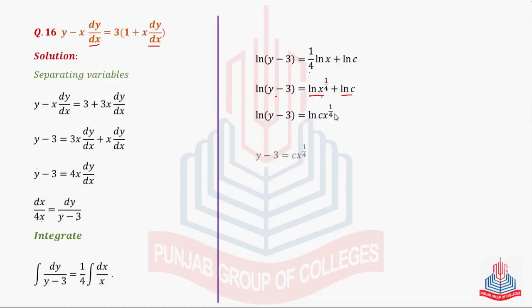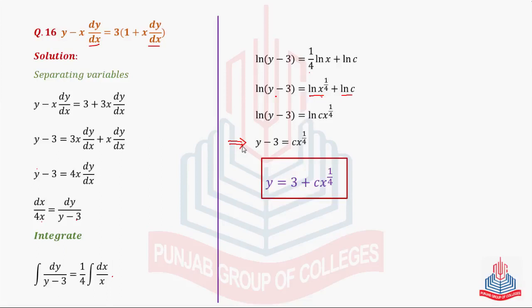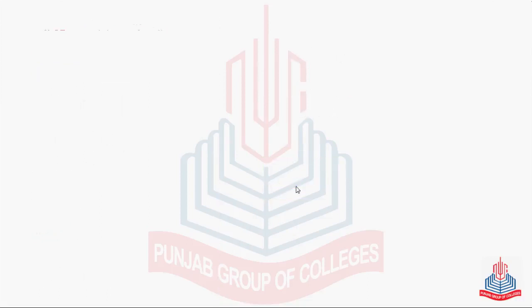Do log add ho rahe hain to values multiply ho jaati hain: log c x raised to the power 1/4. And we have y minus 3 is equal to c x raised to the power 1/4. So the required answer will become y is equal to 3 plus c x raised to the power 1/4.